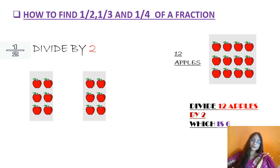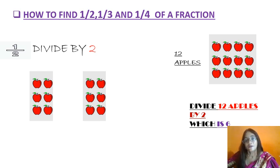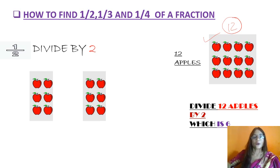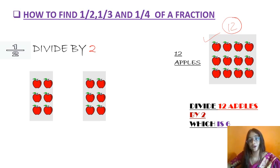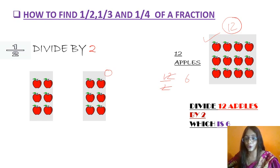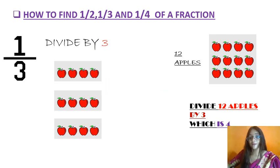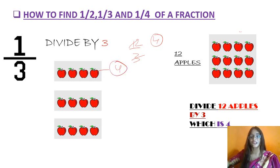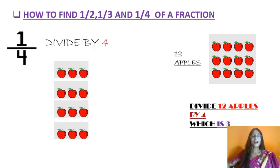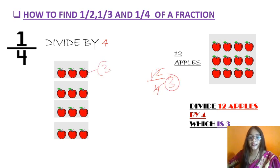Now we will discuss how to find half, one-third, and one-fourth of a number. Suppose we have 12 apples. To find the half of 12 apples, we divide 12 by 2, and we get 6 apples. So 6 is half of 12 apples. Now, to find one-third of 12 apples, we divide 12 by 3 and we get 4 apples each. Similarly, to find one-fourth of 12 apples, we divide 12 by 4 and we get 3 apples each. Well done!